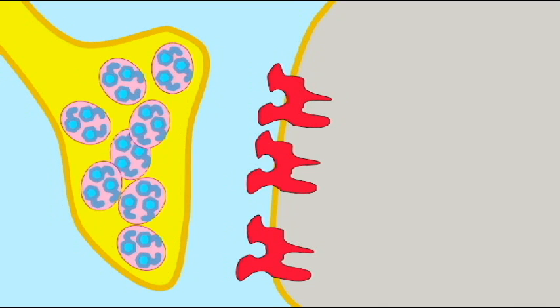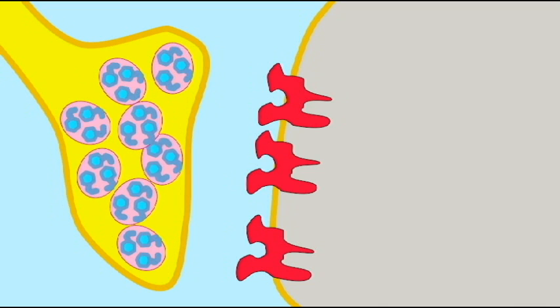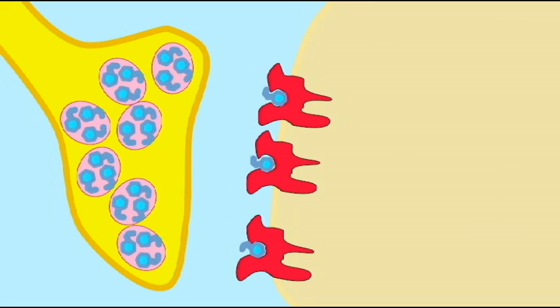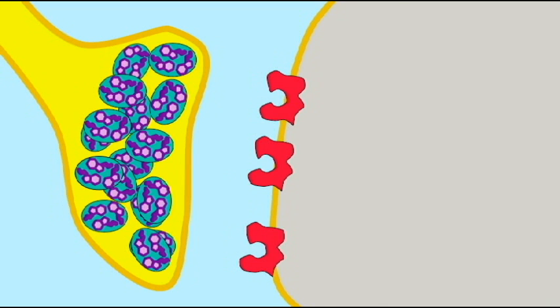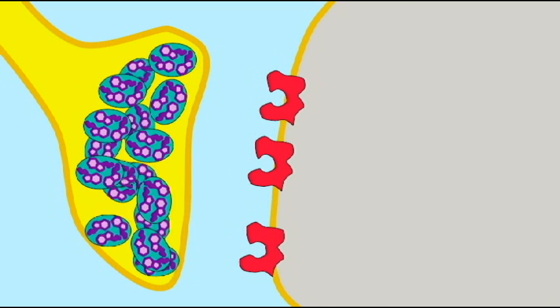Others however function differently. When the neurotransmitter binds to the receptor, it starts a second messenger system or activates another molecule inside the cell which will then activate the ion channel and allow the ions to travel from an area of high concentration to low.